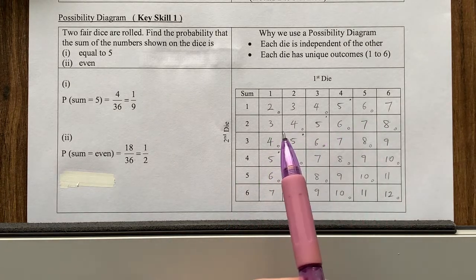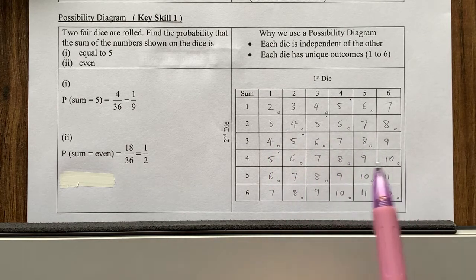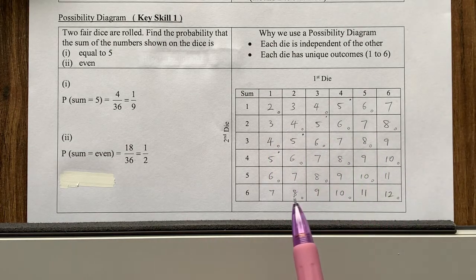So one, two, three, four, five, six, seven, eight, nine, ten, eleven, twelve, thirteen, fourteen, fifteen, sixteen, seventeen, eighteen.